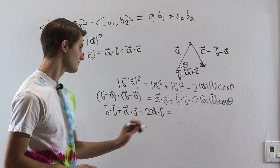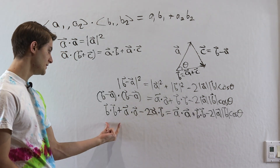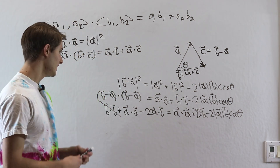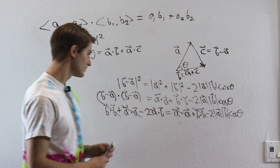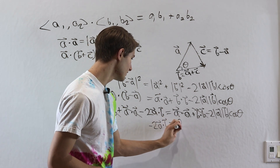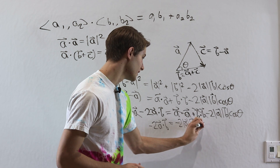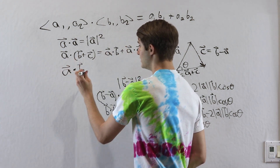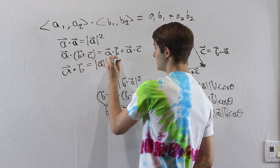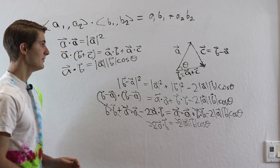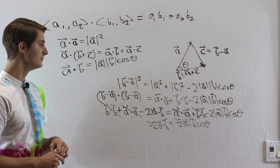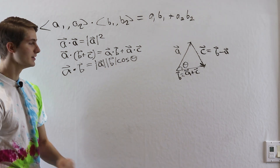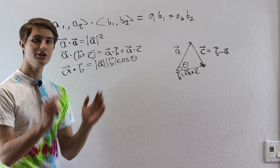Setting those equal, the b·b terms cancel and the a·a terms cancel. All we have left is −2(a·b) = −2|a||b|cosθ. Dividing both sides by −2, we get our final identity: a·b = |a||b|cosθ, where theta is the angle between vectors a and b.